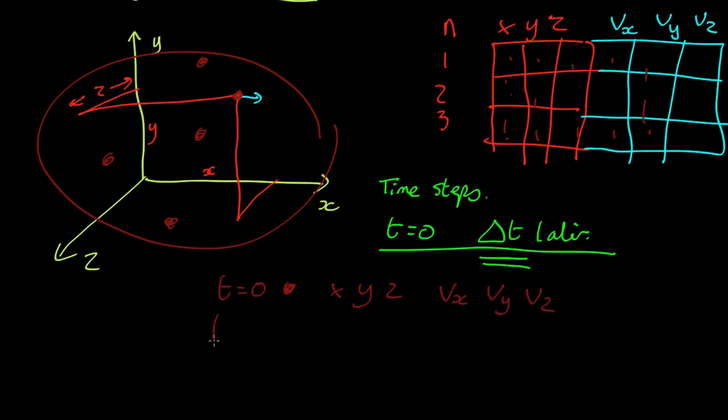Well the simplest approximation is just to say that the new position will be x, the old position, plus the velocity times the time. That's actually the definition of velocity. Velocity is the rate of change of position.